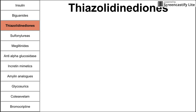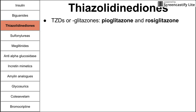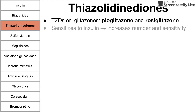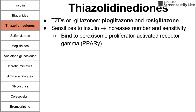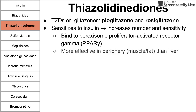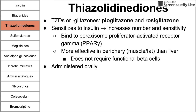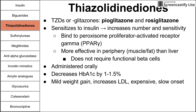Next are the thiazolidinediones, also called TZDs or glitazones. Two drugs worth knowing are pioglitazone and rosiglitazone. Like metformin, they sensitize to insulin by increasing the number and sensitivity of insulin receptors. They specifically bind the PPAR-gamma receptor — the peroxisome proliferator-activated receptor gamma. They are more effective in the periphery, meaning muscle and fat, than in the liver — unlike metformin. They do not require functional beta cells. These glitazones are administered orally and decrease HbA1c by 1 to 1.5%. They are unpopular because they cause mild weight gain and can increase LDL. They are also expensive and slow in onset.